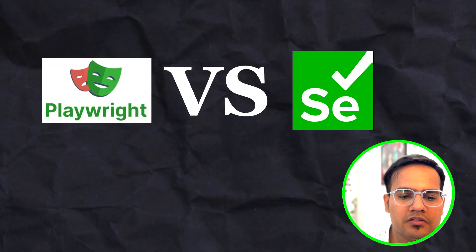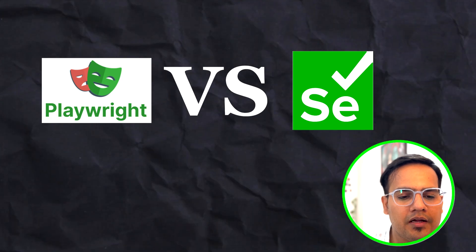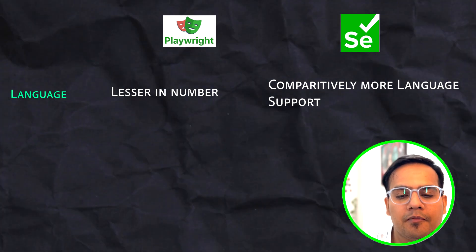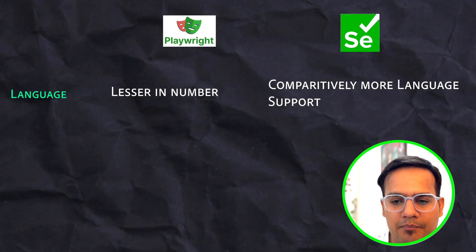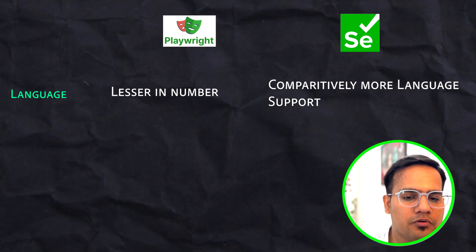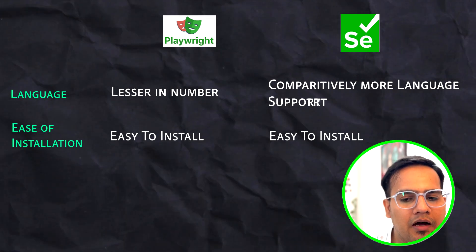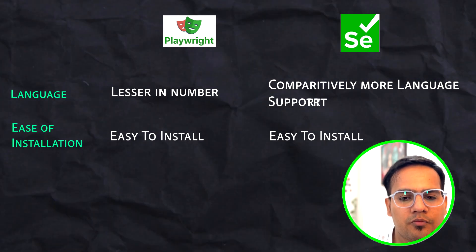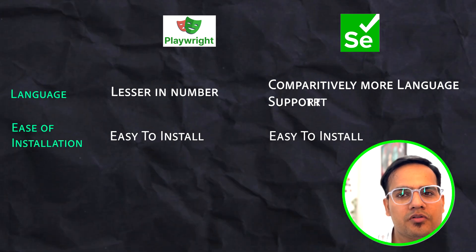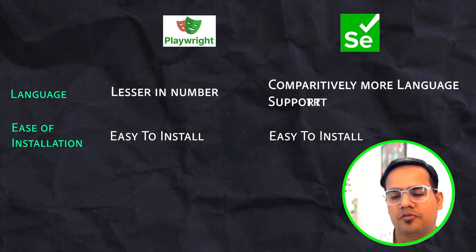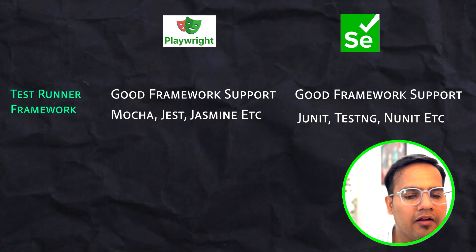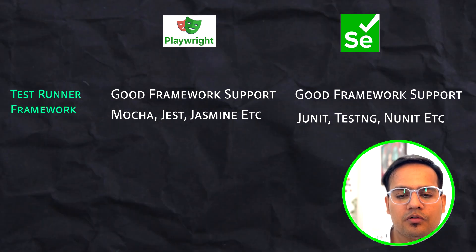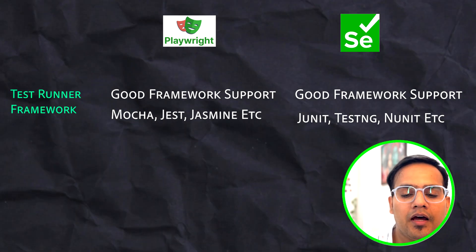Now for the comparison — Playwright versus Selenium. On language support, Playwright supports comparatively fewer languages while Selenium covers Java, Python, C#, Ruby, and many more. On ease of installation, both are easy to install: Playwright requires Node.js, while Selenium setup depends on the language — for example, adding JAR files for Java. For test runner frameworks, Playwright supports Mocha, Jasmine, and others, while Selenium, being a library, supports JUnit, TestNG, and NUnit depending on the language.